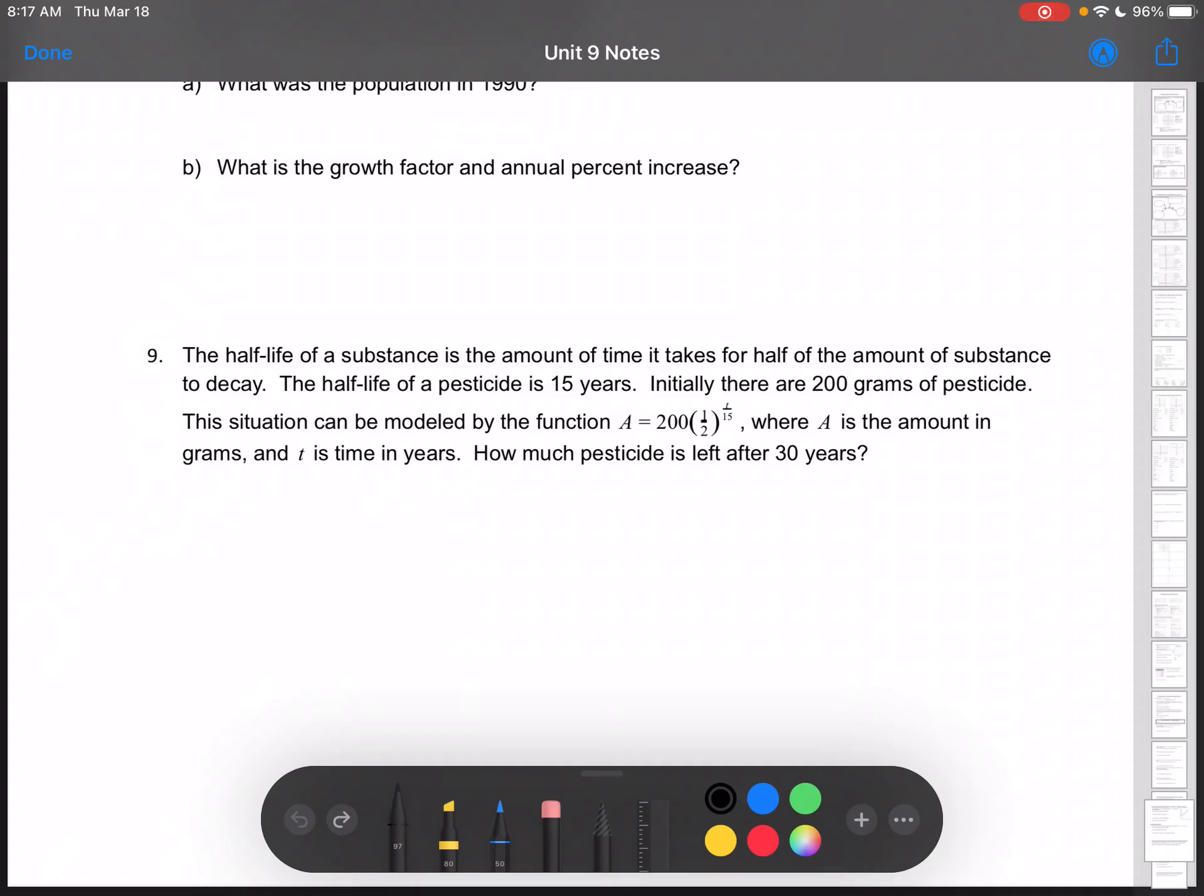I'm going to show you how to interpret A equals 200 times one-half to the power of T divided by 15. Remember, T is the time, so you want to underline 30 years and write A equals 200 times one-half to the power of T.